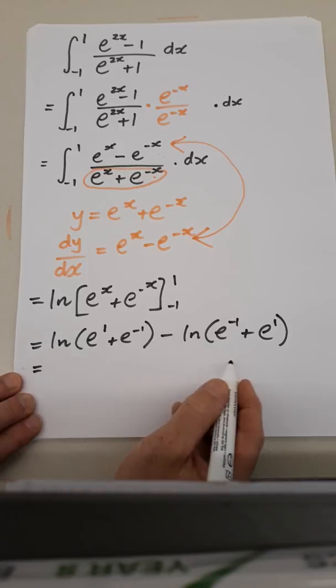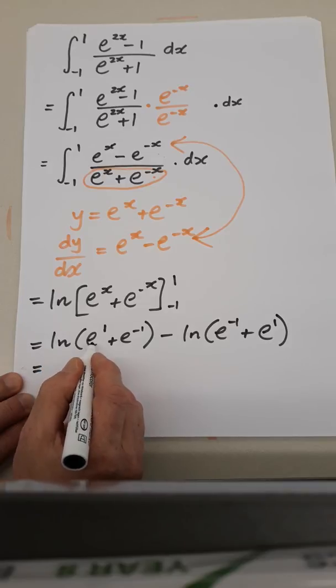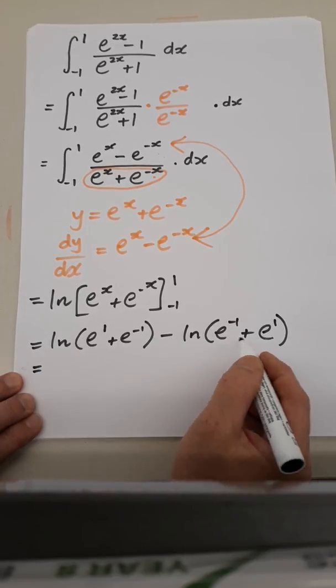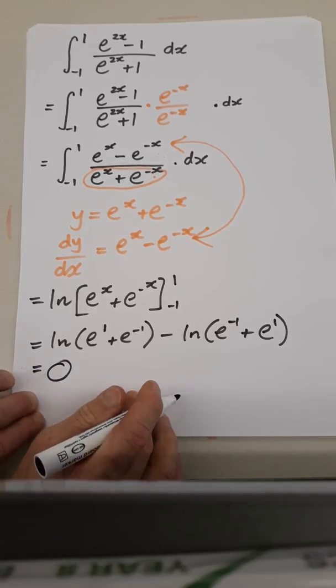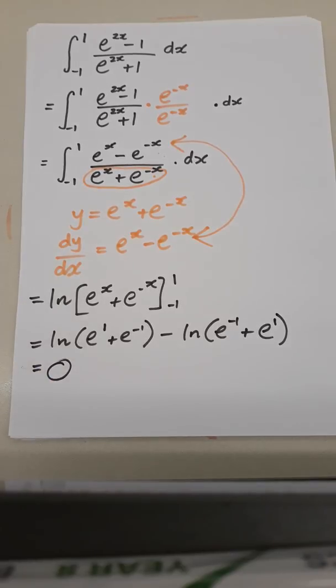That's, they're the same thing, isn't it? It's natural log of e to the 1 and e to the minus 1 and e to the minus 1. So, it's the same thing minus itself. So, it's equal to 0. Okay.